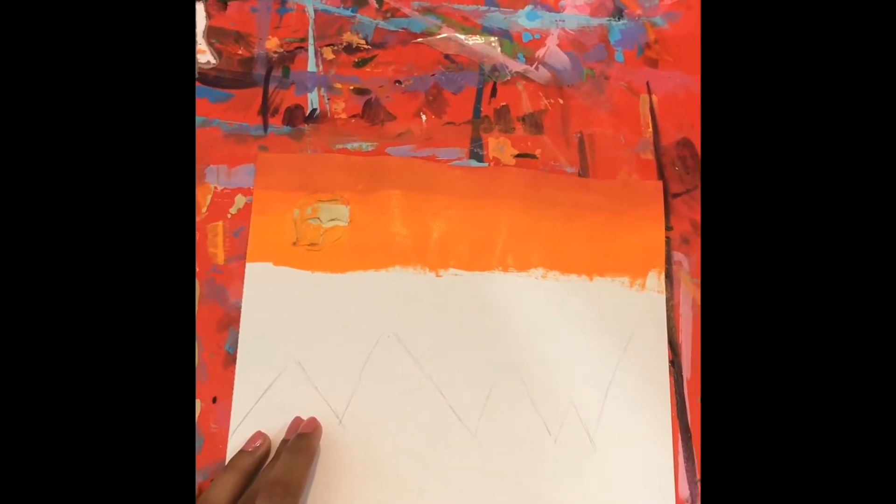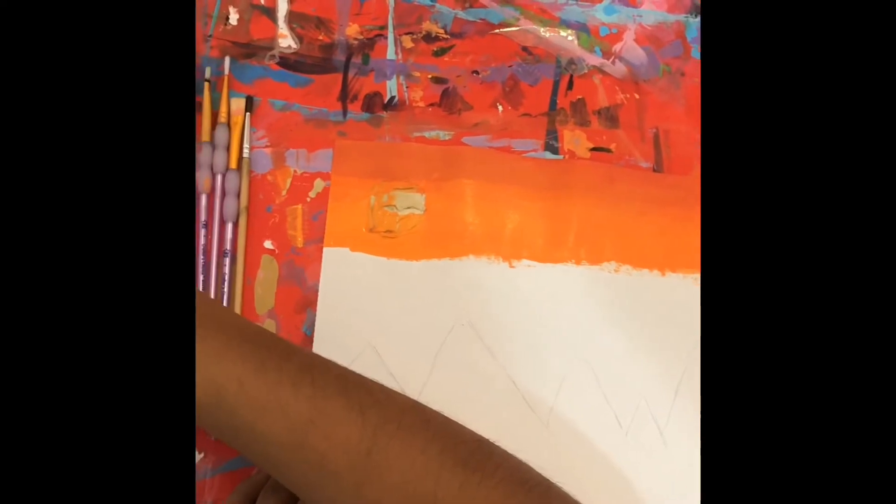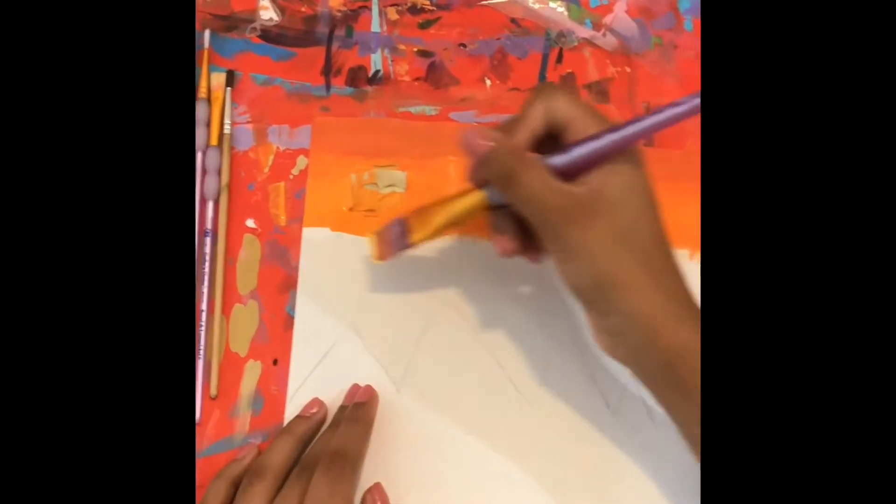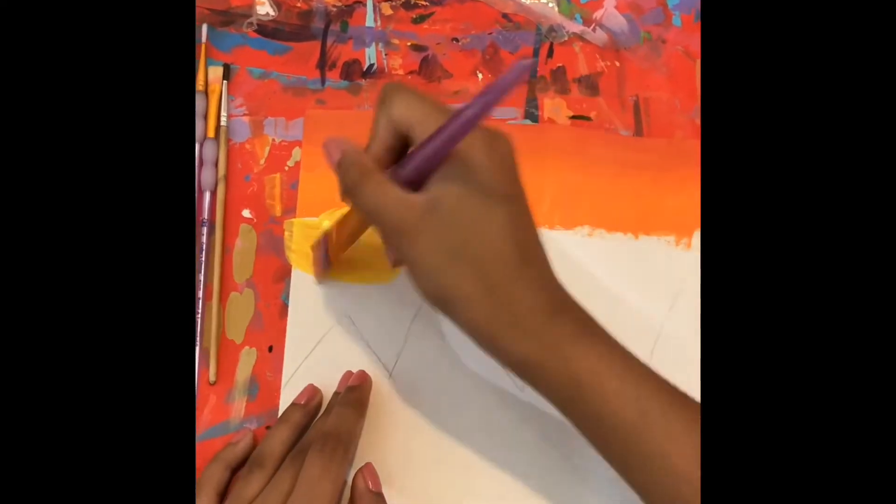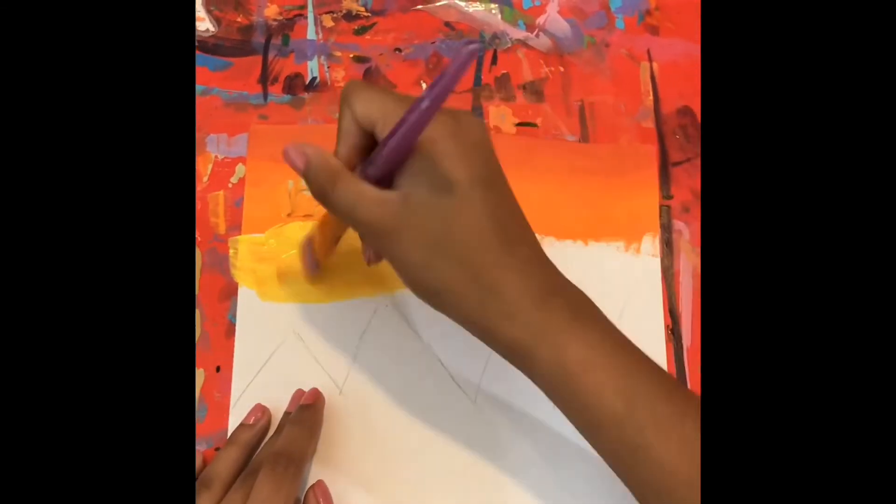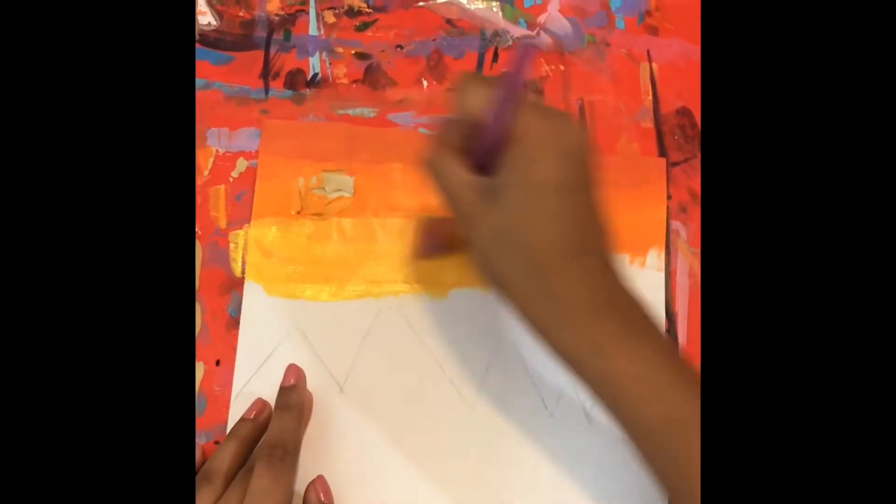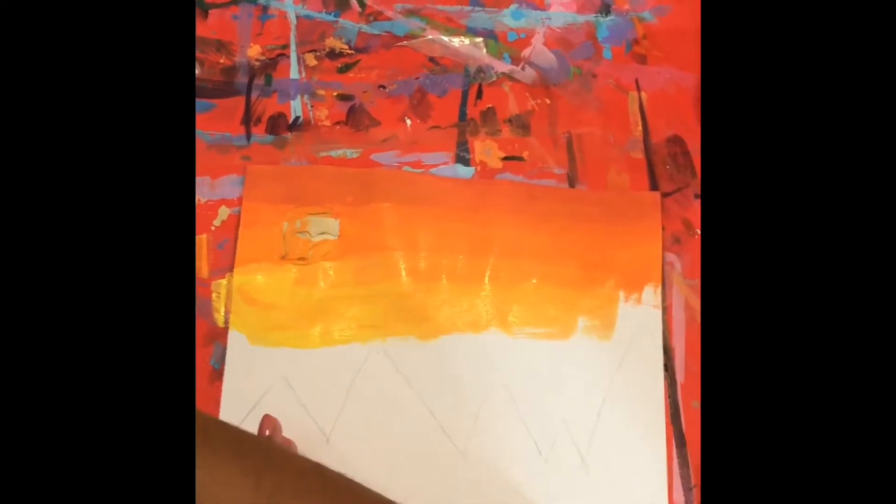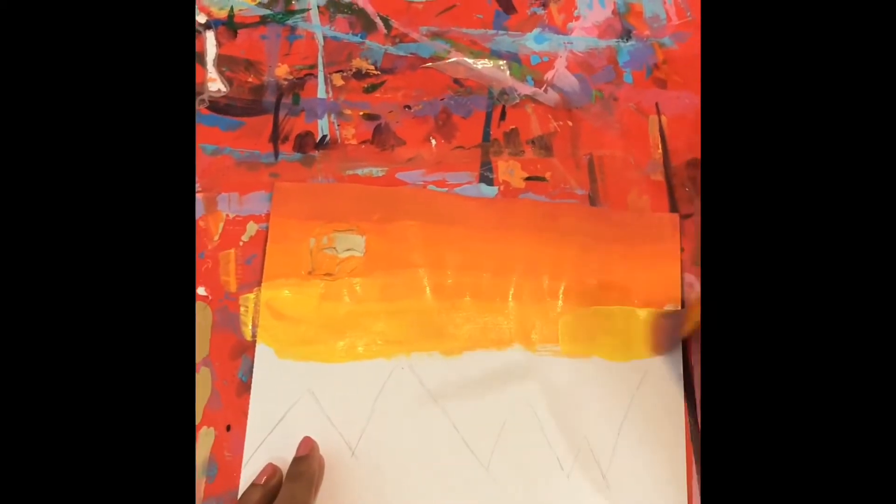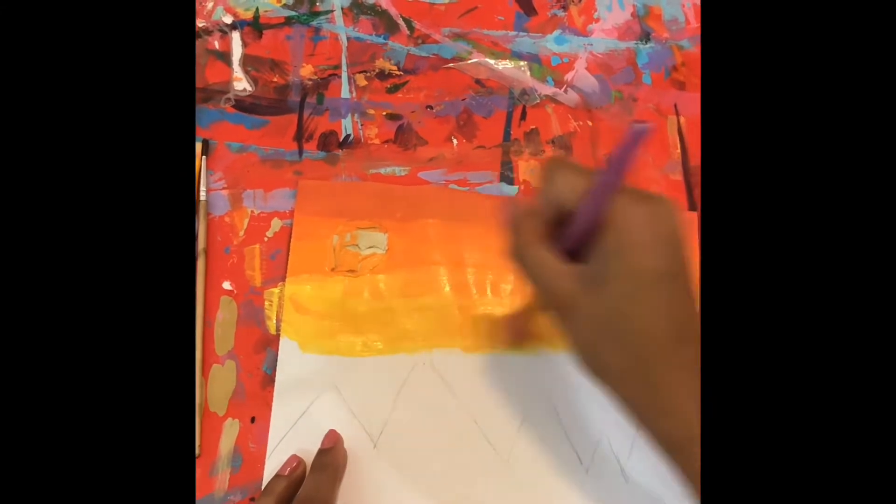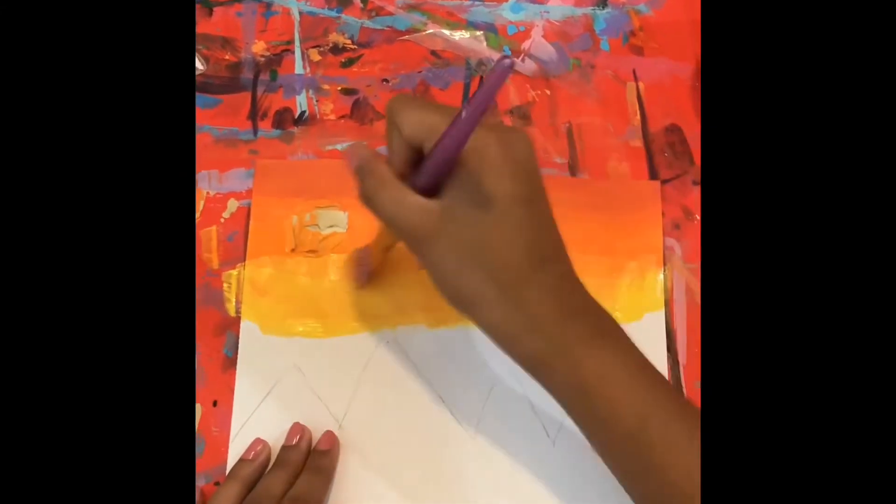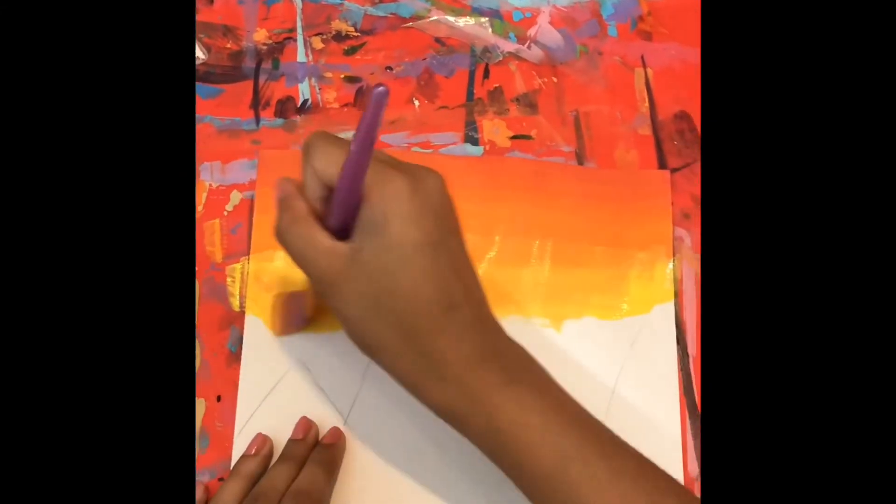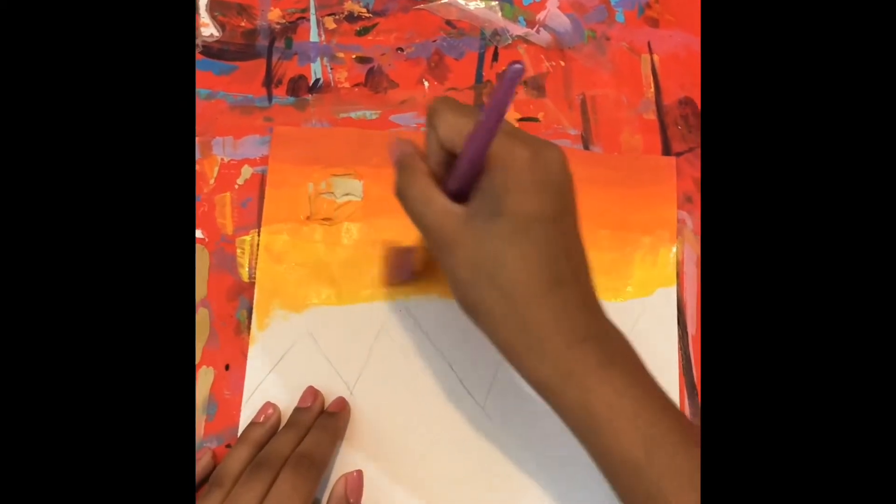You want to start with this and just blend it over. You can see that it has a bit of an orange tint to it. As you can see it's shaping. Just make sure to avoid the mountains.